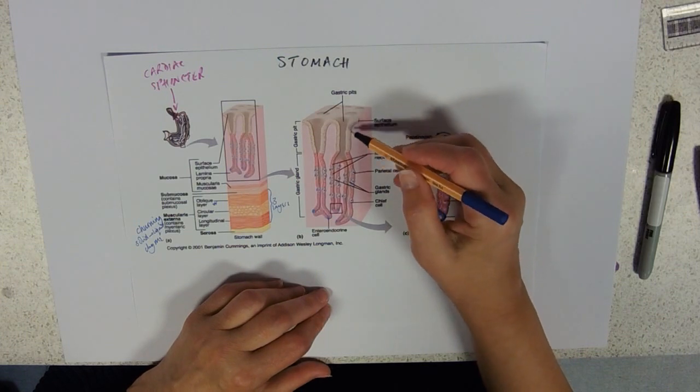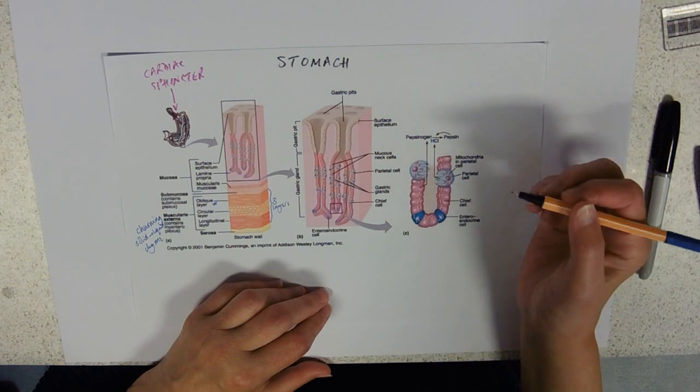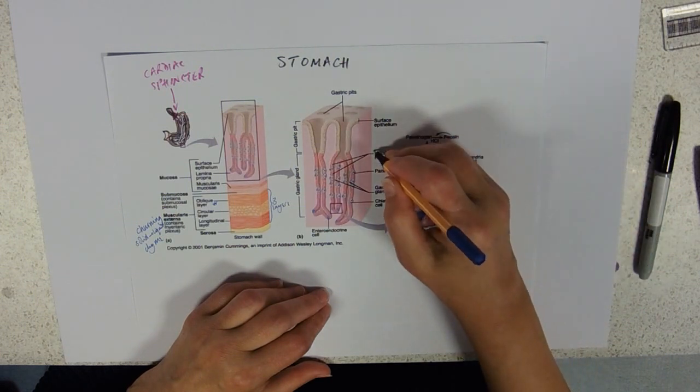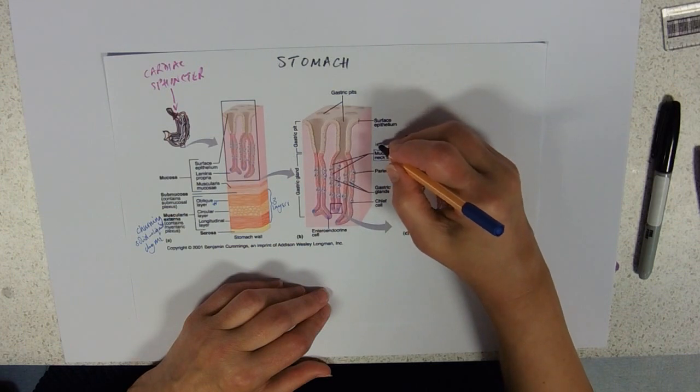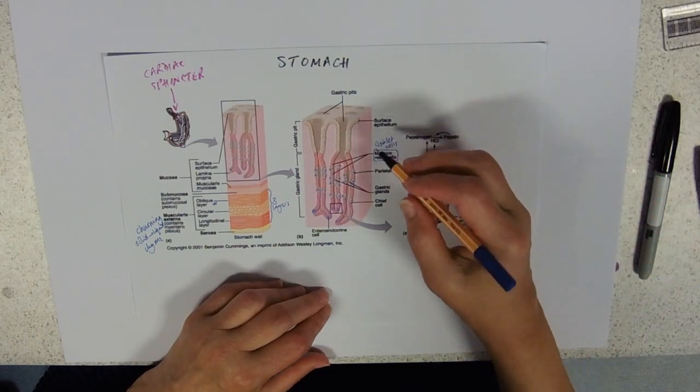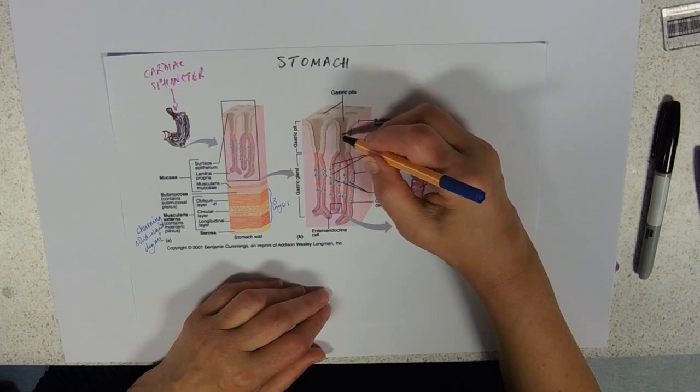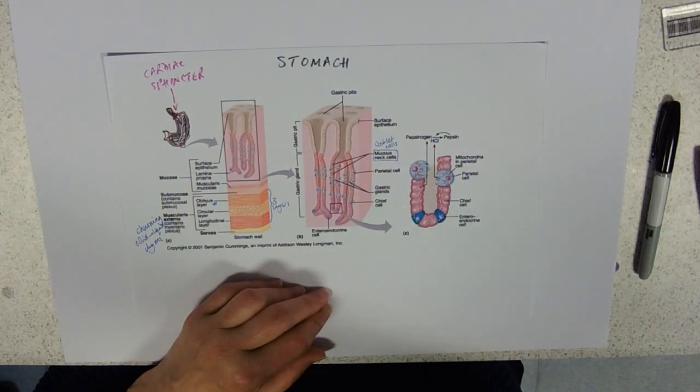They've got their usual suite of epithelial cells, and up near the top they've got mucus neck cells—these are what we call goblet cells, covered in an earlier video. These secrete mucus which passes up and lines all of this surface to prevent it being digested and damaged.